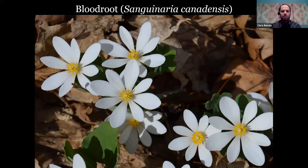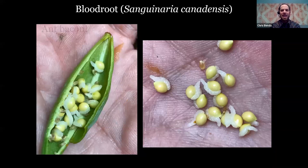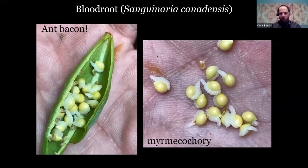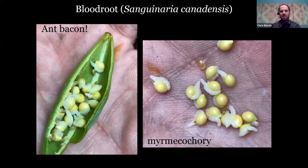Cool about bloodroot is its seed dispersal mechanism — these are actually dispersed by ants. They're covered in elaiosomes, which are fatty tissue that I jokingly call 'ant bacon.' Each seed has a little white elaiosome on it that is very nutrient-rich fatty tissue that ants like to consume. Ants will carry these seeds to their den, consume the fatty tissue, and then dispose of the seed in their waste area — that's how the seeds are dispersed. The very fancy term for this is myrmecochory, meaning seed dispersal by ants. Dutchman's breeches and trout lily also do this.